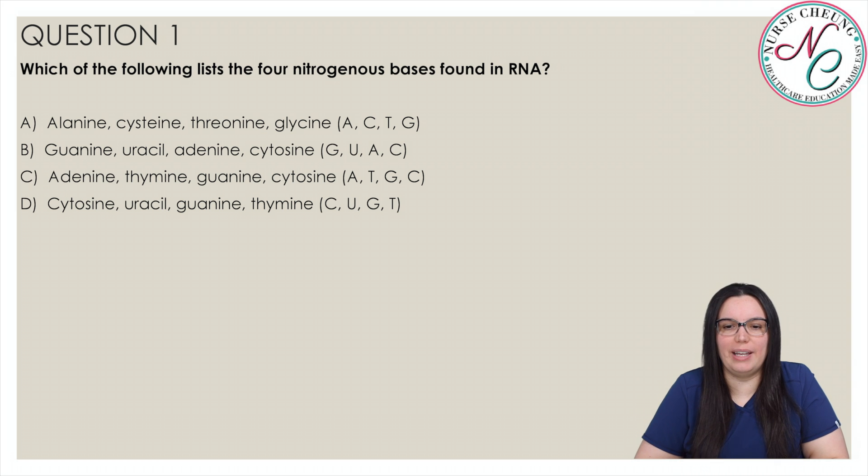Question 1. Which of the following lists the four nitrogenous bases found in RNA? Is it A: alanine, cysteine, threonine and glycine, B: guanine, uracil, adenine, cysteine,